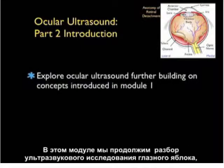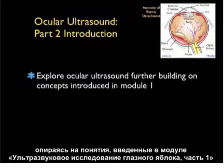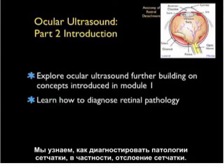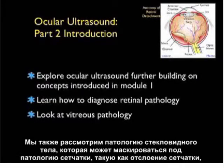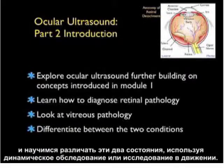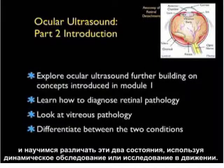In this module, we'll further explore ocular ultrasound, building on those concepts introduced in Ocular Ultrasound Module Part 1. We'll learn how to diagnose retinal pathology, specifically retinal detachment. We'll also look at vitreous pathology, a possible mimic of retinal pathology, and learn how to differentiate between the two conditions using the kinetic or movement examination.